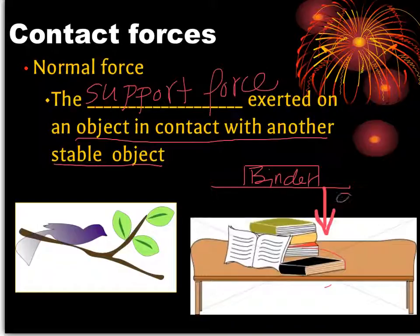But we know that this can't be the only force acting on the book, because if it were, the book would be crashing down through your desk. So there has to be an equal and opposite force keeping this binder in place. And that's where the normal force comes in.